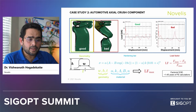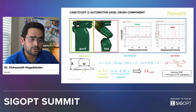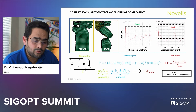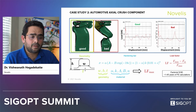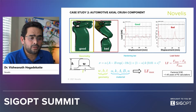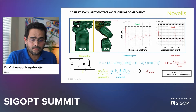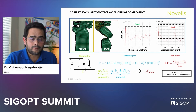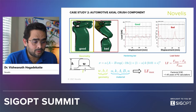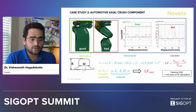The next example I wanted to show was about an automotive component. Novelis supplies flat-rolled aluminum sheets to the automotive market.